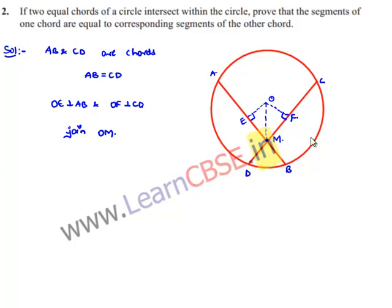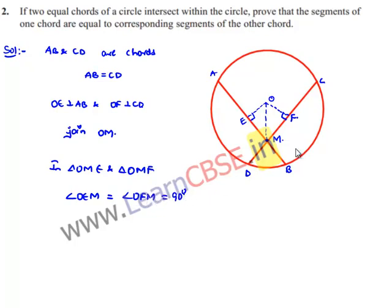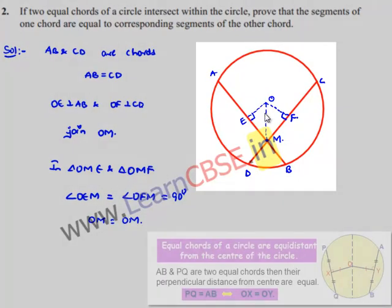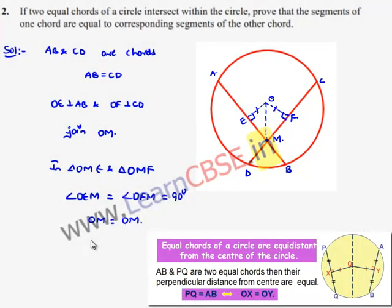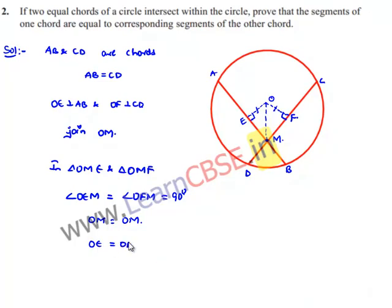Now, observing triangle OME and triangle OMF: angle OEM equals angle OFM equals 90 degrees, since we have drawn the perpendiculars. OM equals OM, which is the common side for both triangles. And since perpendiculars drawn from the center to equal chords are of equal length, we can say that OE is equal to OF.